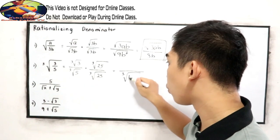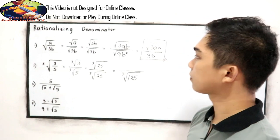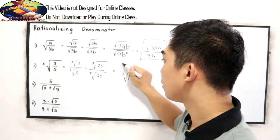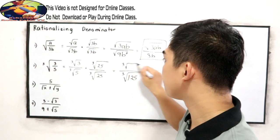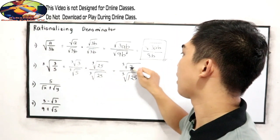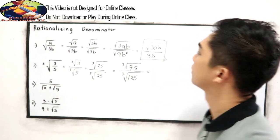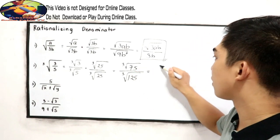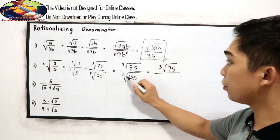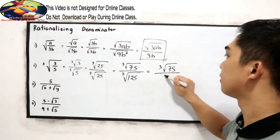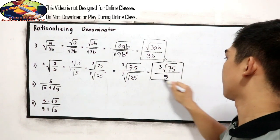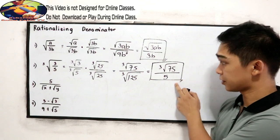So this gives us cube root of 5 times 25, which is 125. And cube root of 3 times 25 gives us 75. So we have cube root of 75 over cube root of 125, which is 5. That will be our final answer.